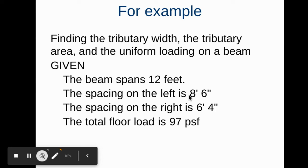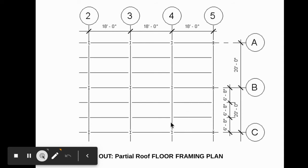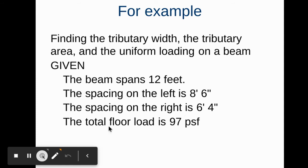The left spacing is 8'6" and the right spacing is 6'4", so it's asymmetric—8'6" on this side and 6'4" on this side. The total floor load, usually composed of dead load and live load, is 97 pounds per square foot. With those numbers, we can find these values.